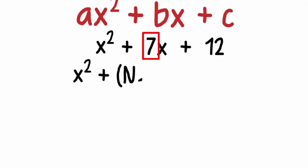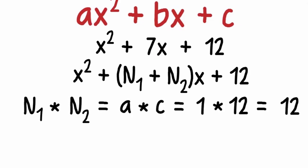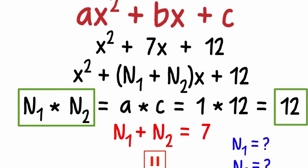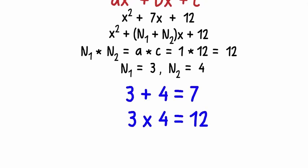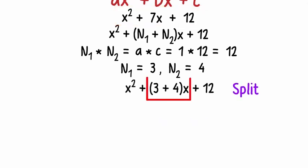We first write the coefficient of the middle term as the sum of two numbers N₁ and N₂, and the two numbers are such that their product equals the product of a and c. So can we think of two numbers such that N₁ plus N₂ is 7 and N₁ times N₂ equals 12? Yes, 3 and 4. 3 plus 4 is 7 and 3 times 4 is 12.